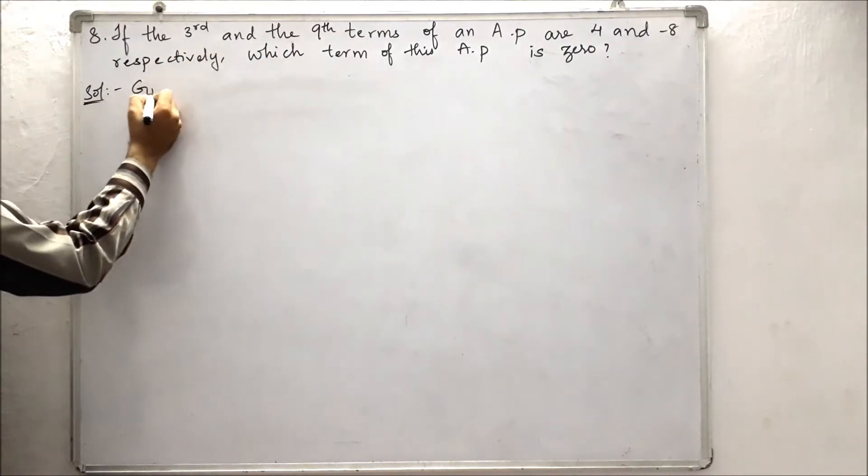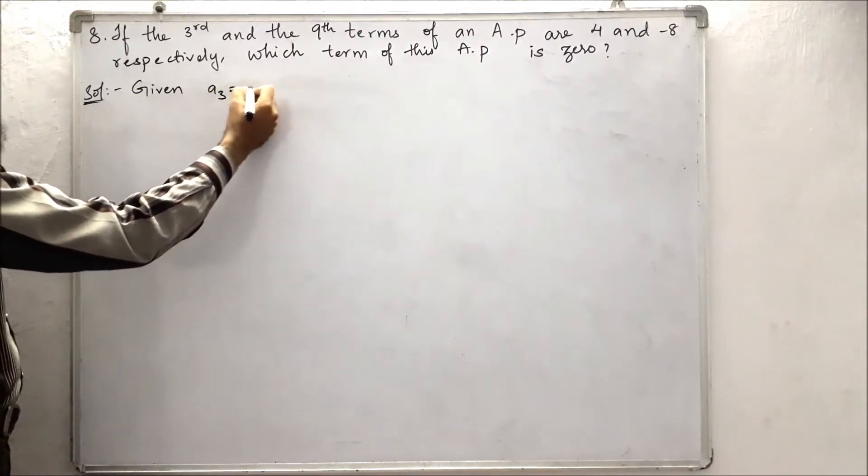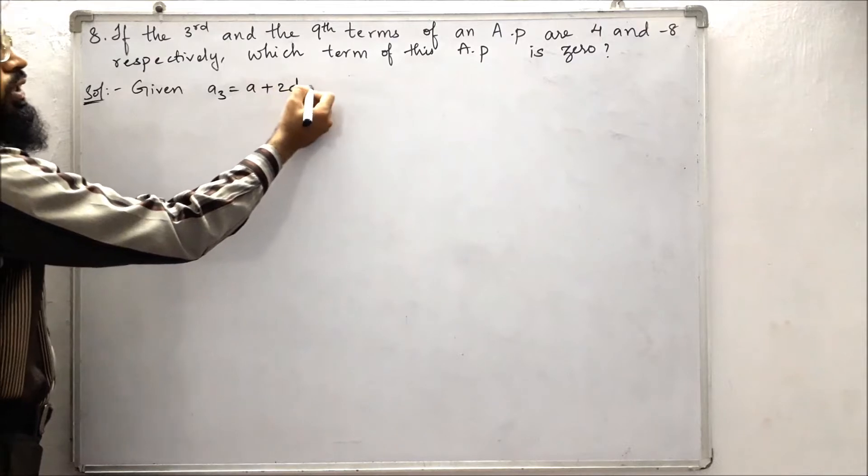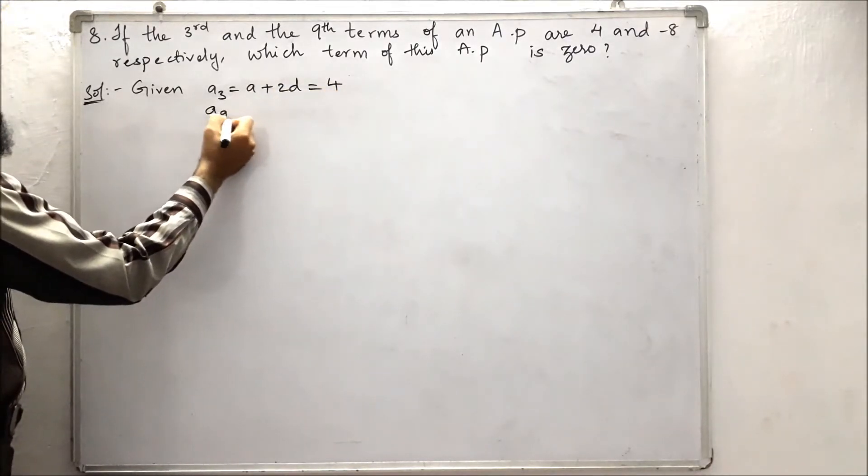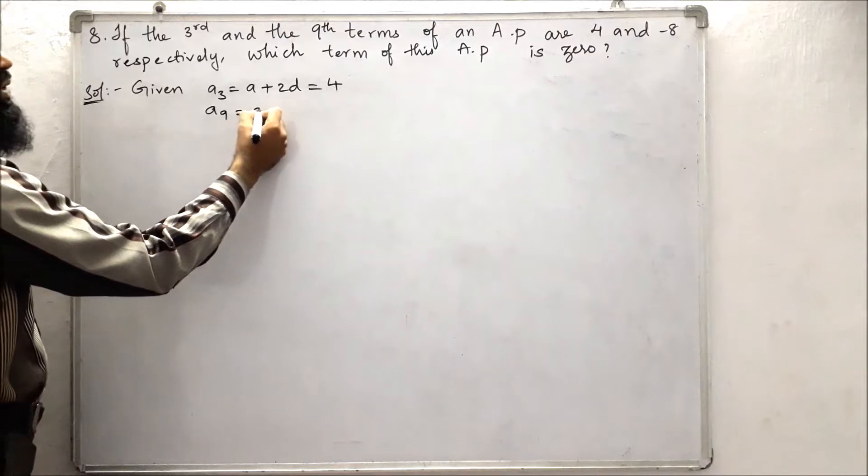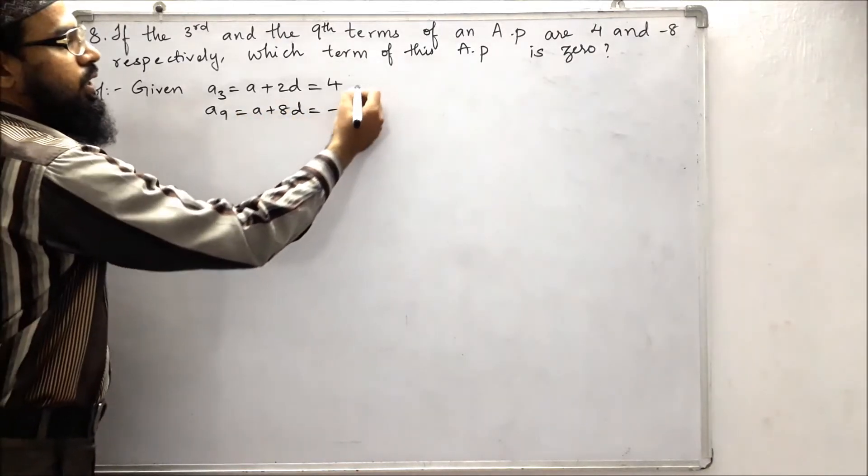Let us write what is given. Given third term, which means we can write a plus 2d, which is equals to 4. And the ninth term, a plus 8d, is equals to minus 8. This is our first equation and second equation.